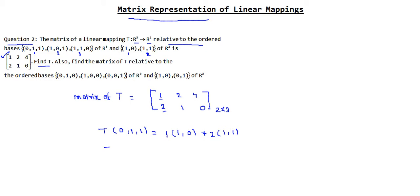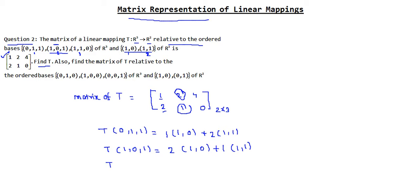Similarly, T of (1,0,1) — the second basis vector — written as a combination of (1,0) and (1,1) has coefficients 2 and 1 from the second column. So T(1,0,1) = 2·(1,0) + 1·(1,1). And T of (1,1,0) from the third column gives coefficients 4 and 0, so T(1,1,0) = 4·(1,0) + 0·(1,1).